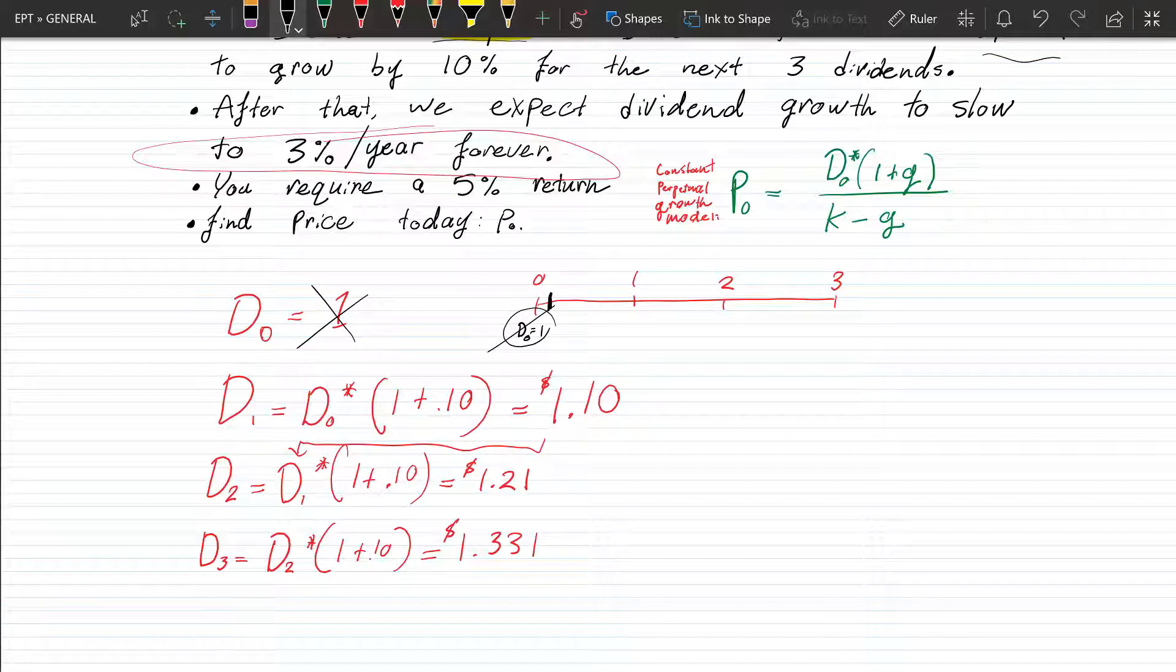The first dividend we're going to be seeing is this one, second, third. Okay, so we got $1.10 as a cash inflow, $1.21 as a cash inflow in year two, and then $1.33 as a cash inflow from year three.